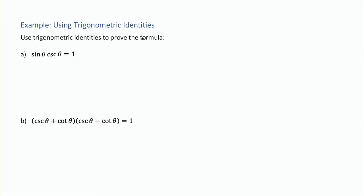Now let's use trigonometric identities to prove a formula. When proving a formula involving trigonometric functions, we start with one side of the equation and try to get to the other. Starting with the more complicated left side: sine of theta times cosecant of theta—cosecant is the reciprocal 1 over sine of theta—so these cancel and we get 1, which equals the right side.